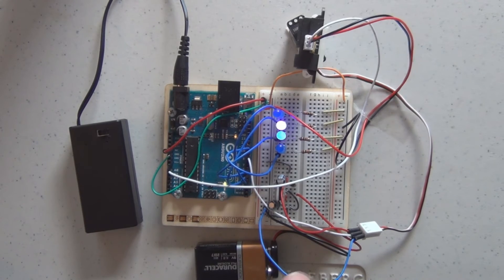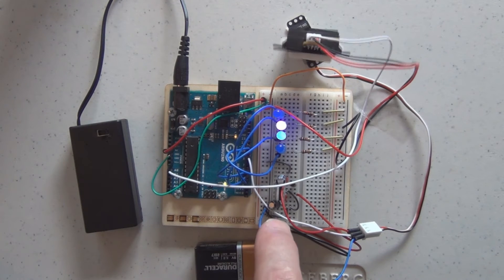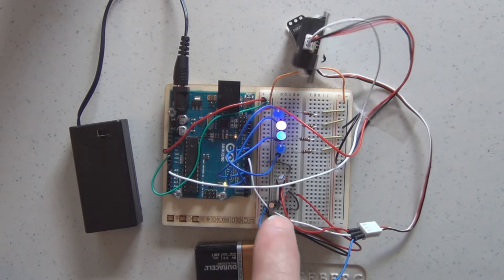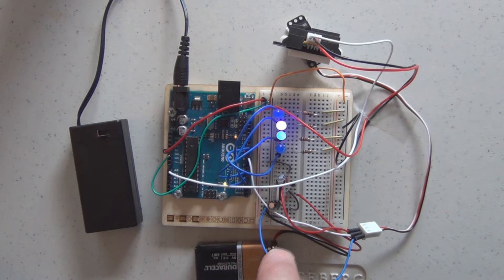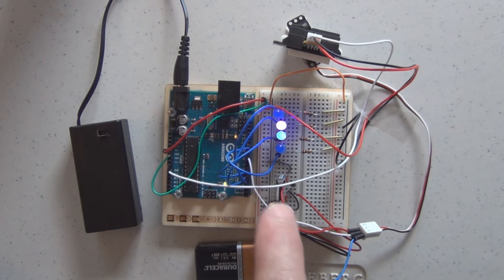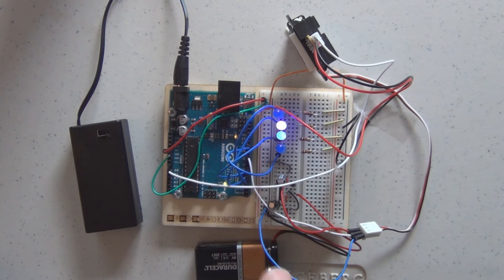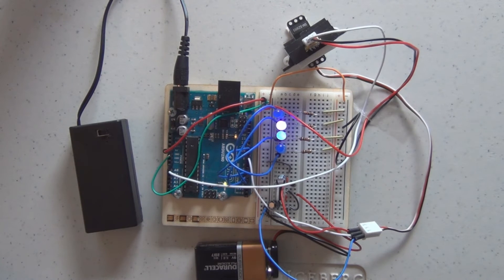Now we're also using pulse width modulation to control the intensity of the lights, of the LEDs, so the closer the object, the brighter the LEDs are going to be lit. So it not only detects an object, it's going to indicate through intensity how close the object is.